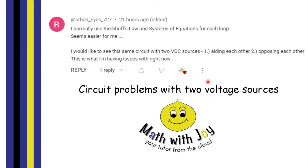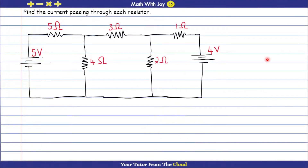Welcome to another video. In this video we are going to deal with a problem with two voltage sources. Shoutout to urban_i727 who asked for a video with two voltage sources — one where they are aiding each other and one opposing each other. I'm going to do one problem because it really doesn't matter whether the voltages are aiding or opposing when using Kirchhoff's voltage or current laws to solve the circuit.